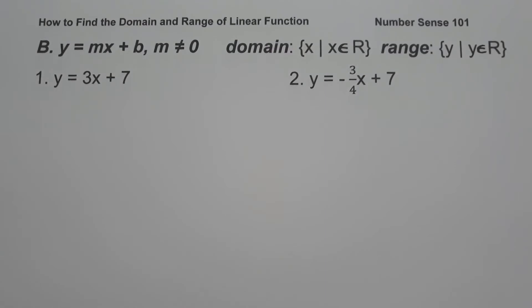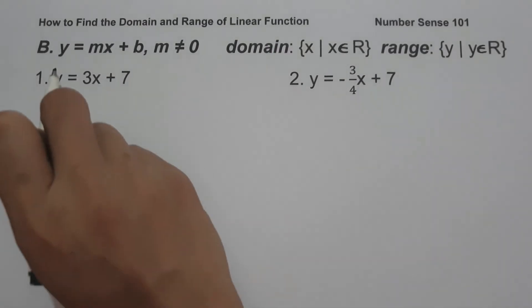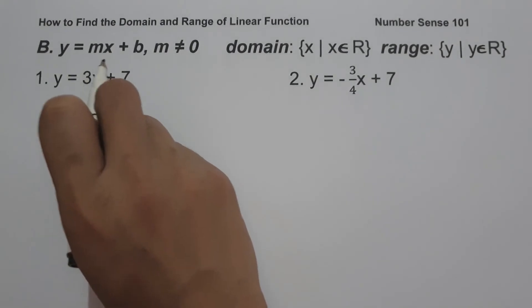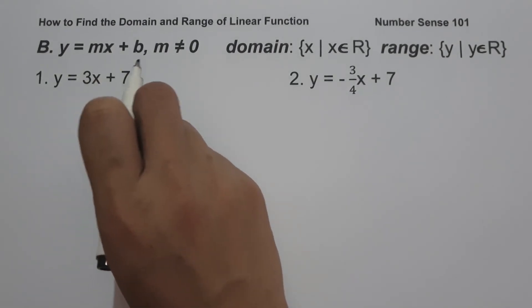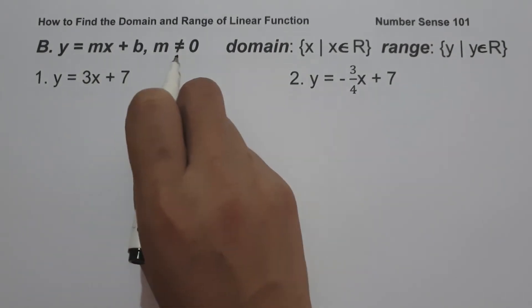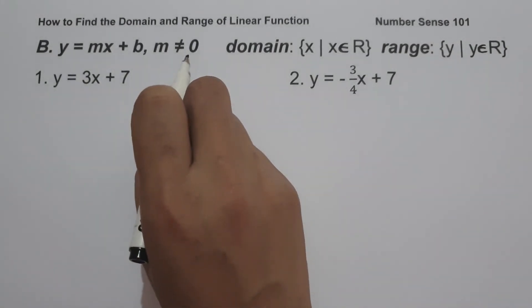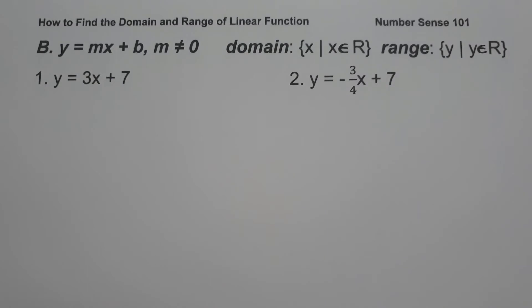The second set of examples: if the linear function is written in the form of slope-intercept form, that is y equals mx plus b, where m is not equal to zero, the domain and range is always the set of all real numbers.